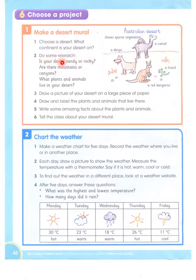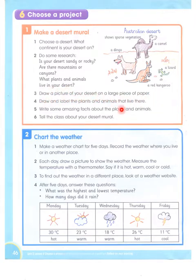Do some research. Is your desert sandy or rocky? Are there mountains or canyons? What plants and animals live in your desert? Draw a picture of a desert on a large piece of paper. Draw and label the plants and animals that live there. Write some amazing facts about the plants and animals. Tell the class about your desert mural.